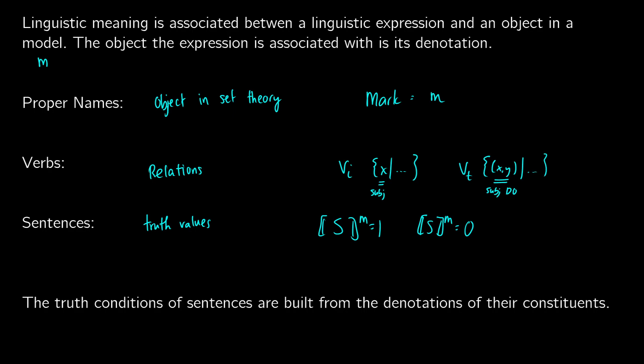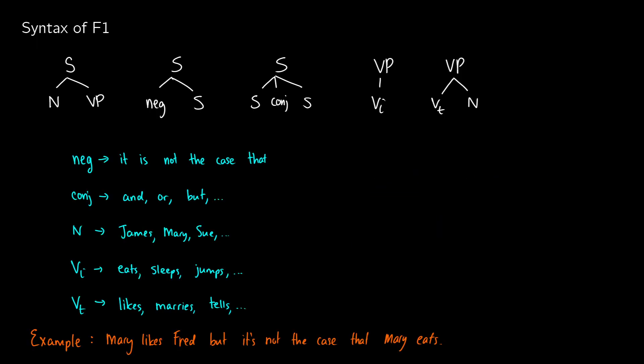Truth conditional semantics assumes basic syntactic constituency. The meaning of a sentence is built up from the meaning of its parts — every constituent gets a meaning, and all those meanings build up to our final meaning. We start with very basic syntax, because if we try to do anything more at this point we'll run into problems. This is Fragment F1 in the Heim textbook. We have: a sentence branches into a noun and a verb phrase; a sentence can take a negation and a sentence; a sentence can take two sentences with a conjunction; a verb phrase can be an intransitive verb; or a verb phrase can take a transitive verb and a noun. So we only have five rules.